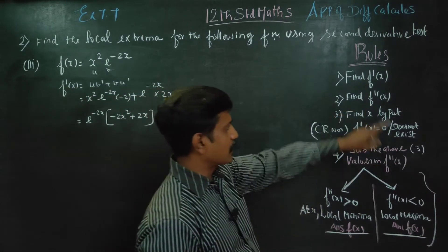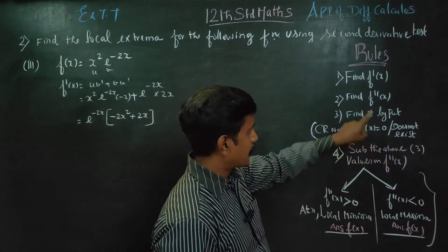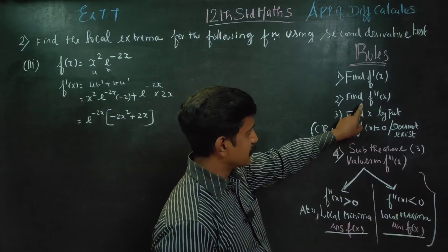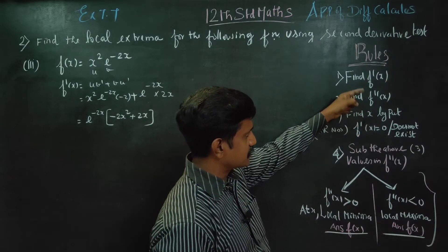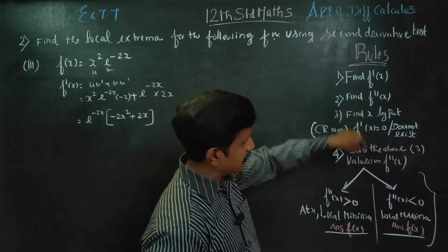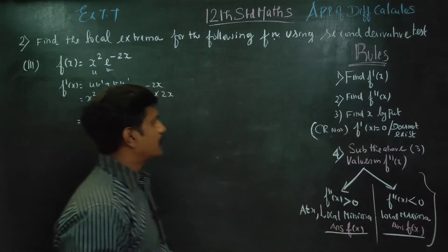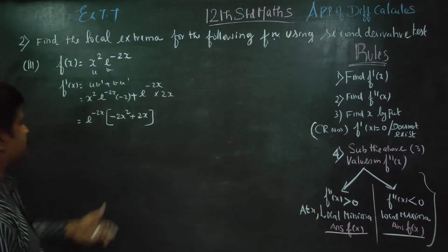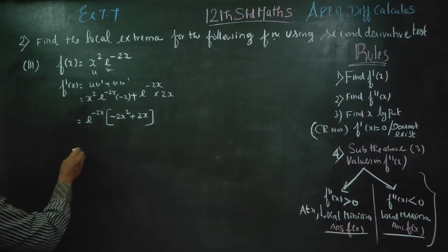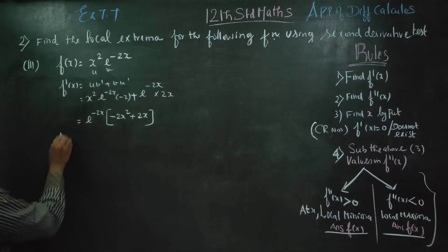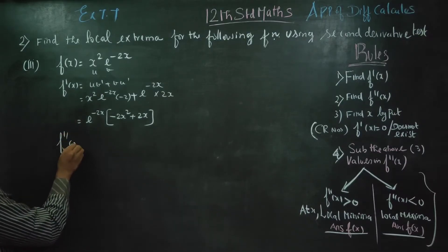Now find f''(x). In the second stage, apply the UV formula again to differentiate f'(x) and obtain f''(x).